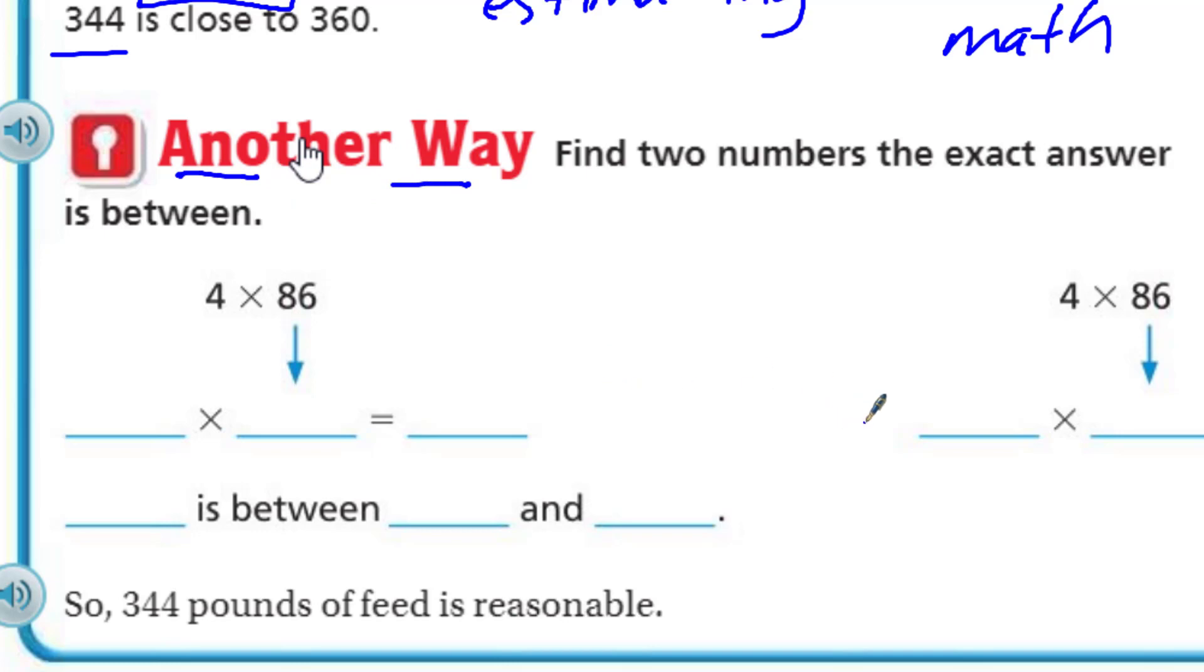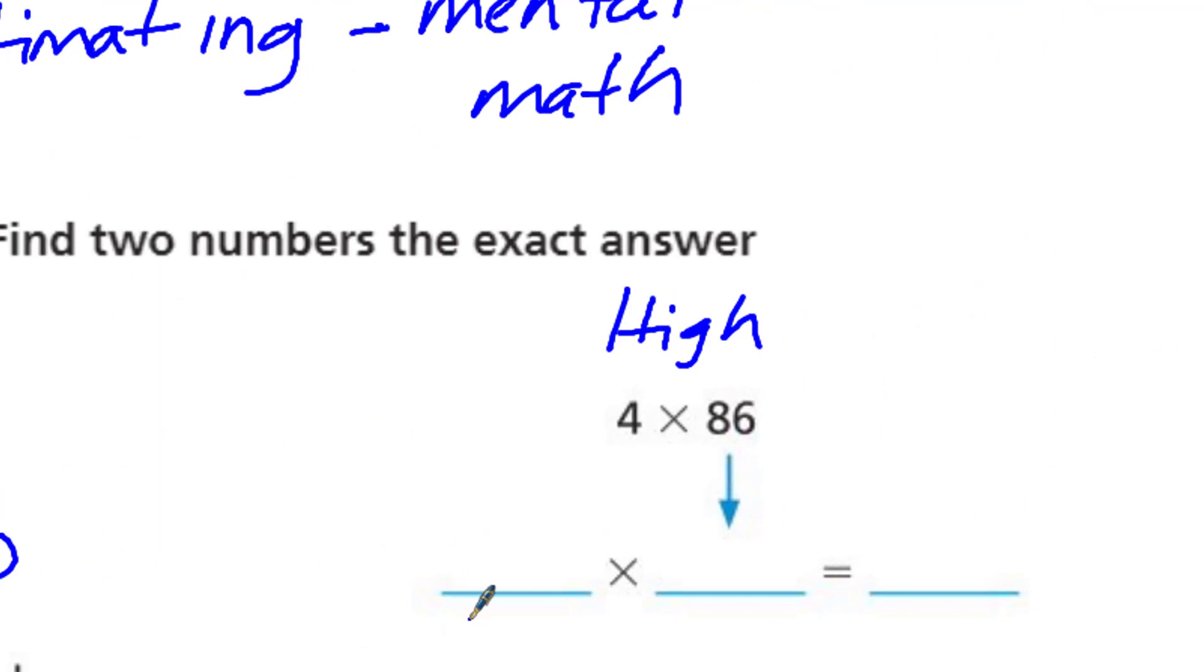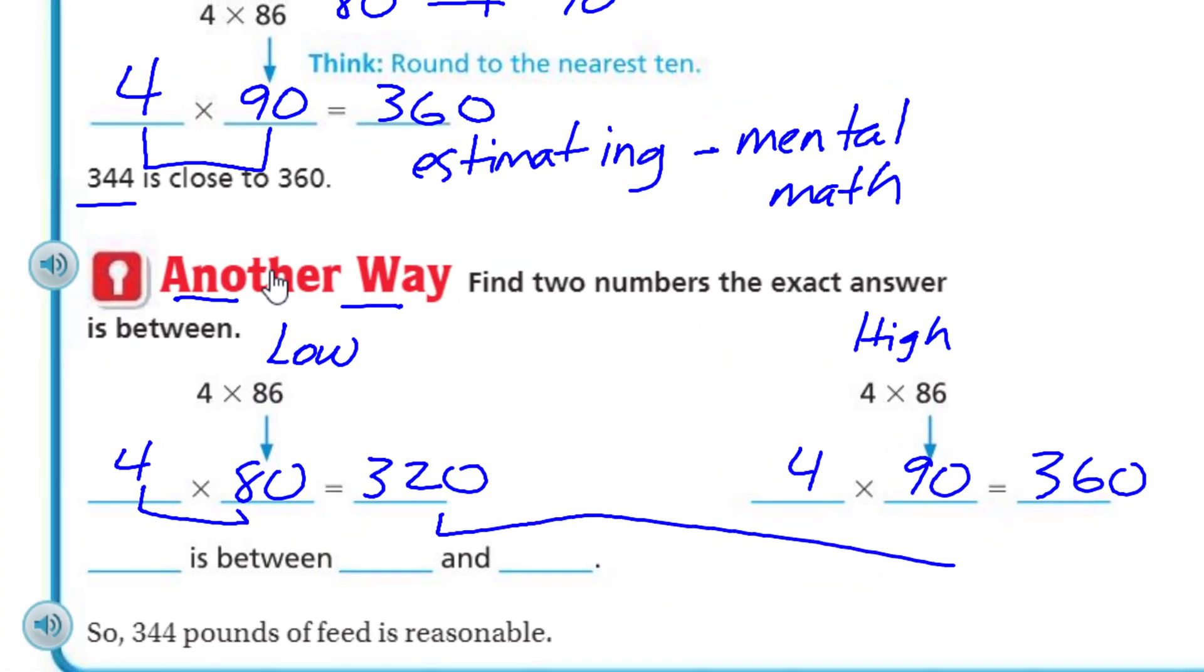It says another way. Find two numbers the exact answer is between. Remember, we go up and down. I'm going to keep using this—I'm thinking low, high, rounding down, rounding up. When I think of this, I think of four times 80, if we're going to find a number in between. Four times 80, we have our simple facts, which is 32, that's four times eight, and we have another power of 10. Over here, four times what we already did, which is four times 90, which we already know is 360. So we know that our answer was 344. It is between 320 and 360. So 344 pounds of feed is reasonable because it fell within that range, a range of 320, which was like a low estimate. High estimate was 360. You can see 344 is going to fit in between, so the answer is reasonable.